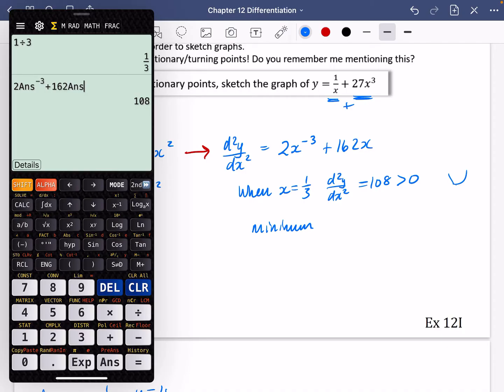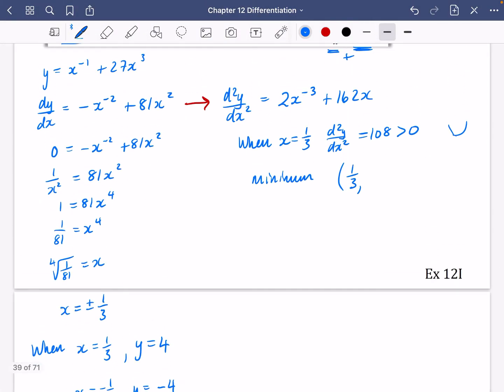Did I type that in right? Yeah, x is equal to a third. Perfect. Okay, so that means it is a minimum when x is equal to a third. So we have a third, and I think the y coordinate was four.